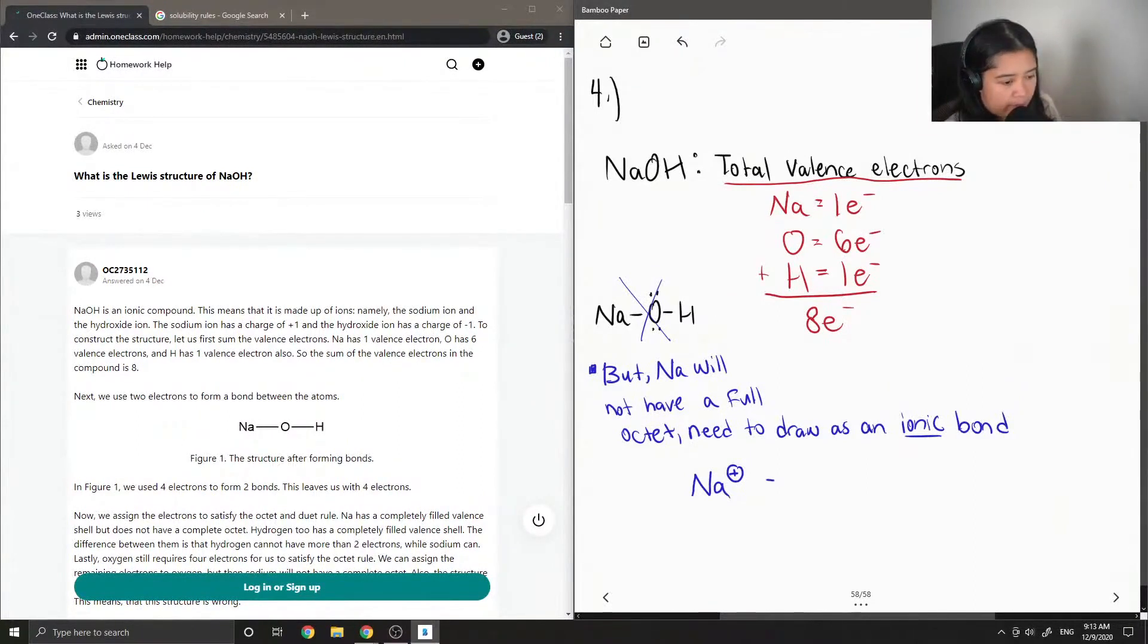So now, I can show our oxygen hydrogen that now has six valence electrons, and it is single bonded to the hydrogen. Okay, so this gives us our Lewis structure for sodium hydroxide.